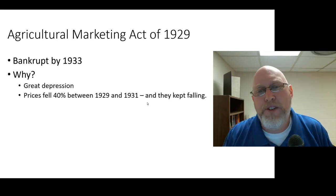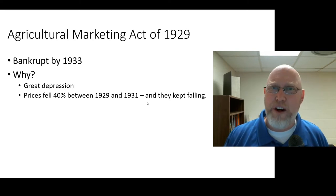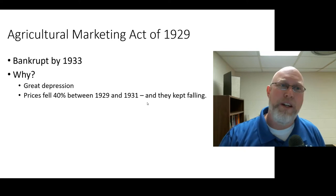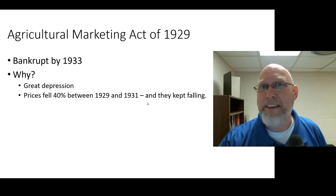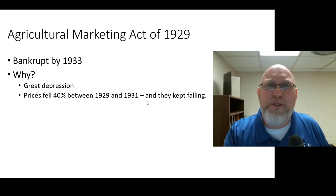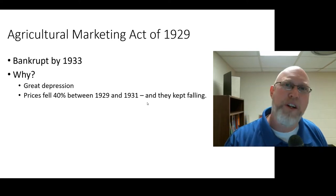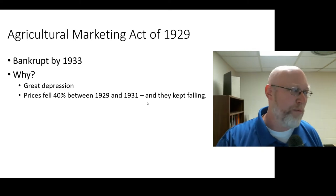During the Great Depression, agricultural prices dropped 40 percent between 1929 and 1931, and they just kept right on falling.